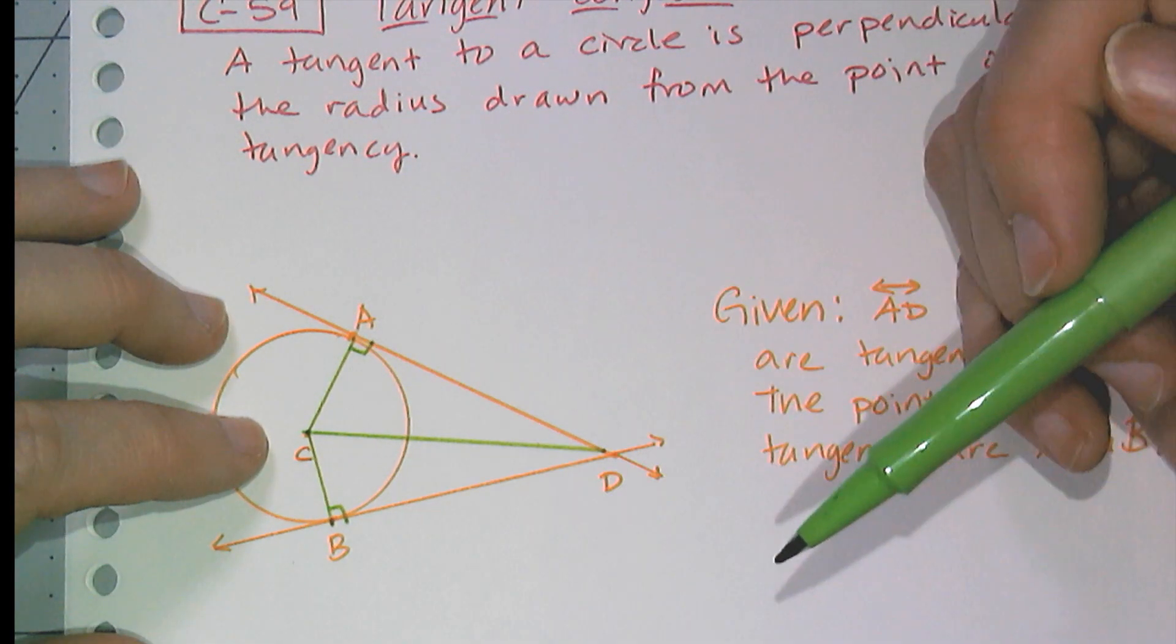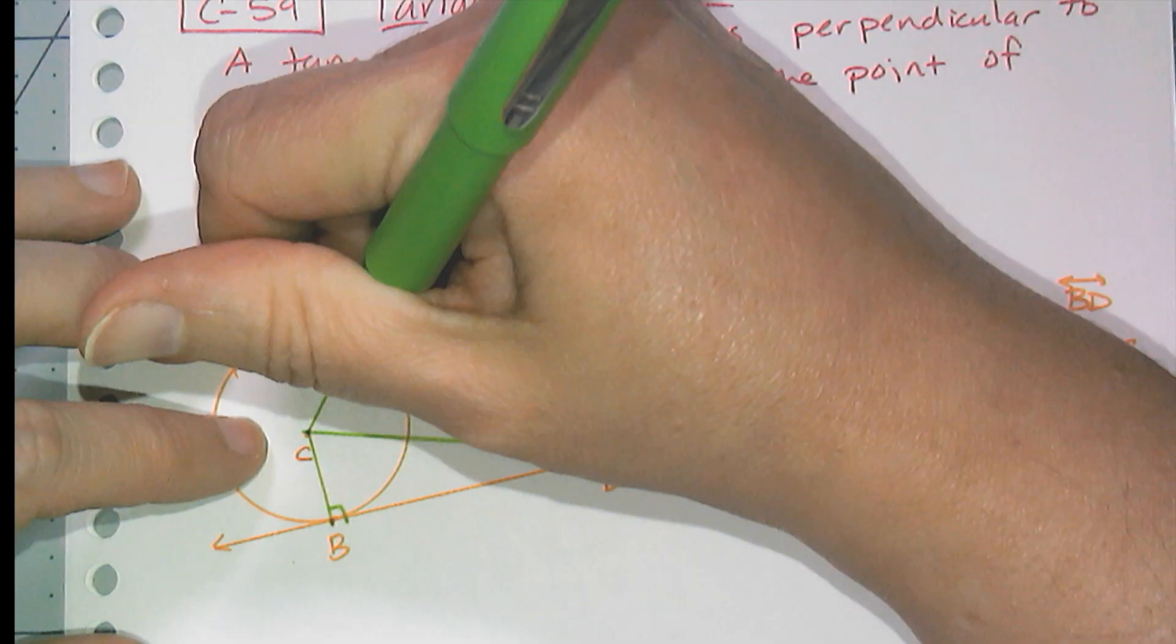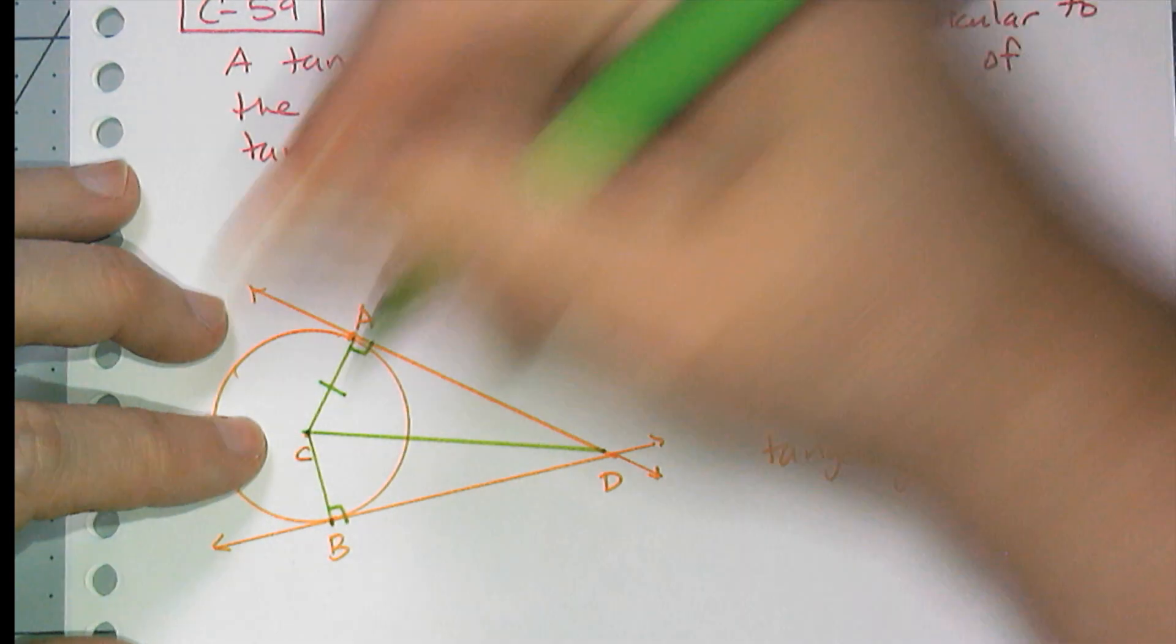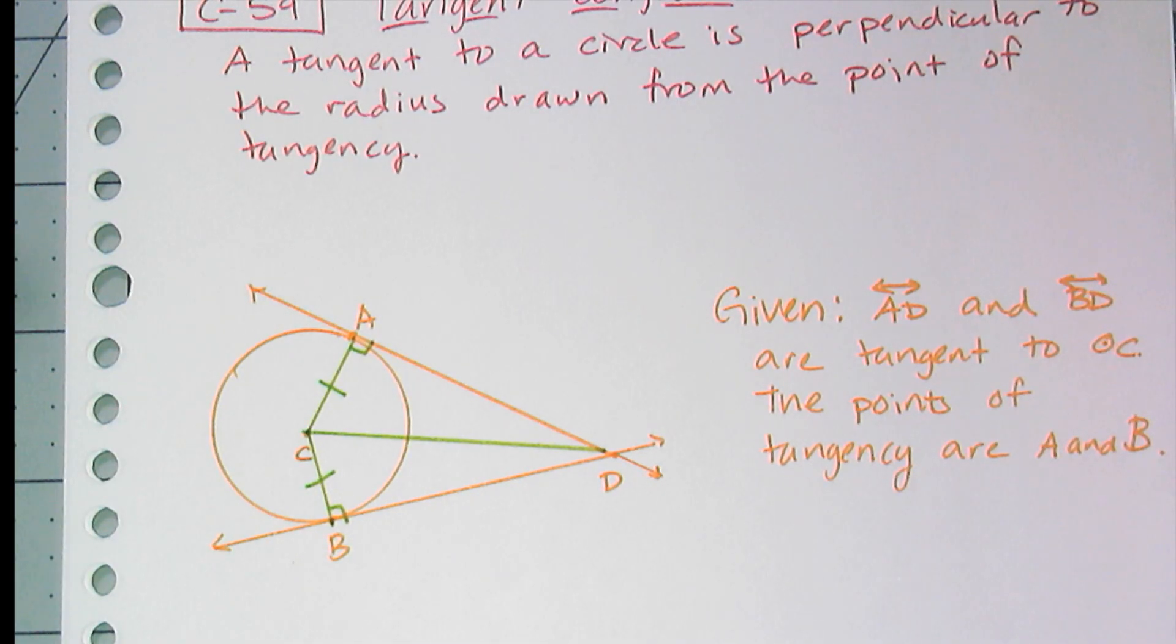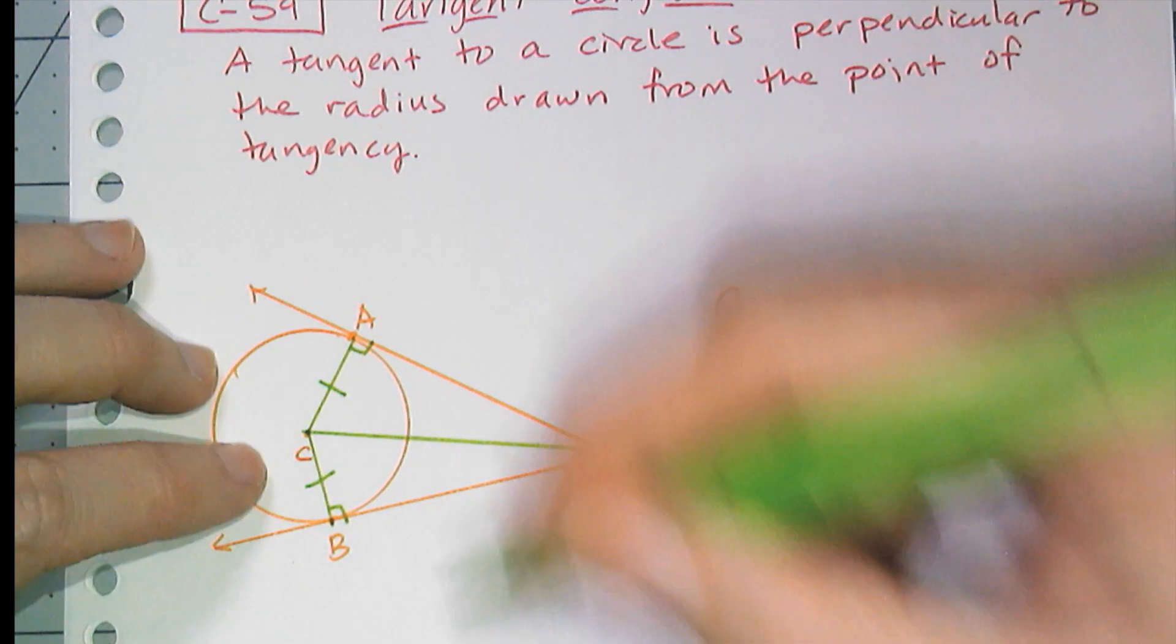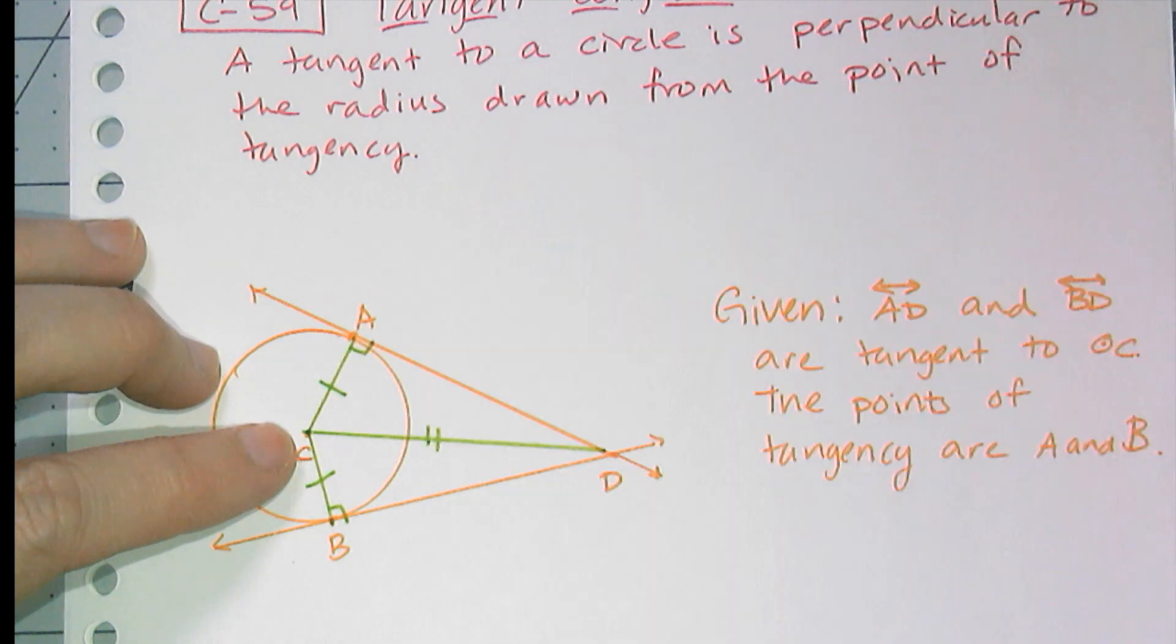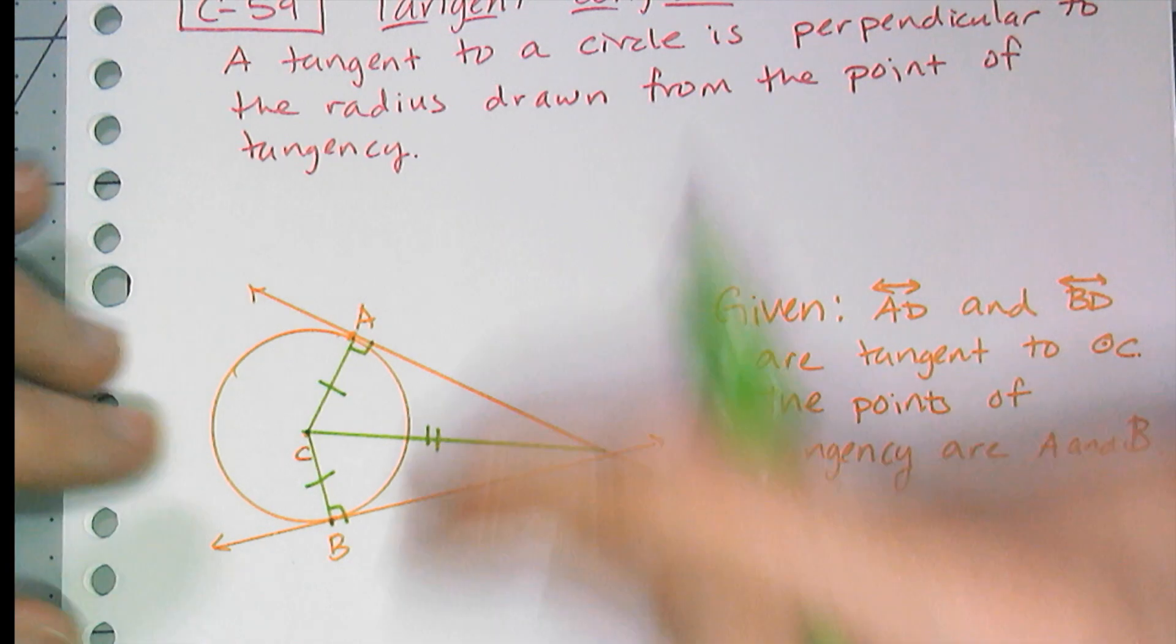Cool. I know this has to be equal to that. So AC has to equal CB because they're both radiuses of the same circle. And I know CD has to be equal to itself by the reflexive property. And I'm like, oh, but wait a minute. That's angle side side.